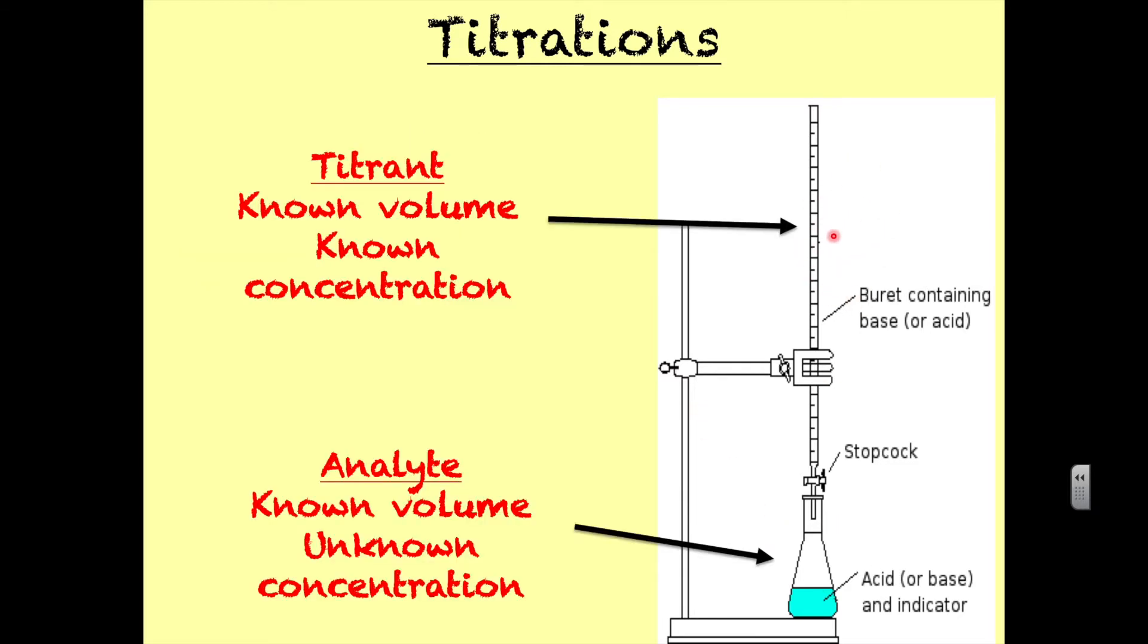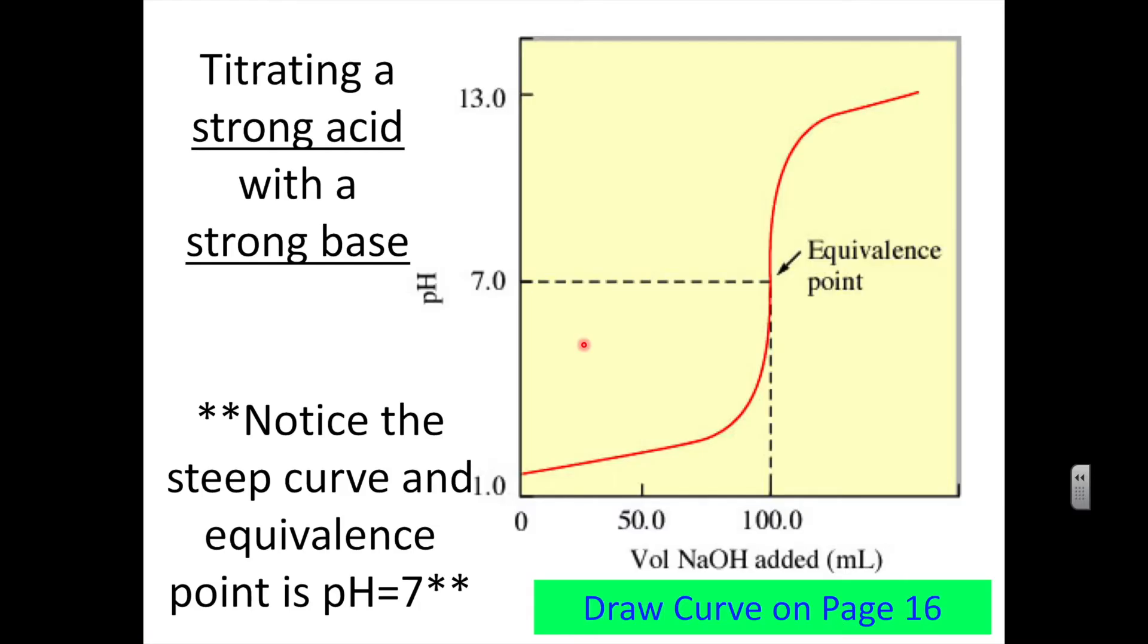This stuff is called the titrant right here, and this stuff is called the analyte. We put it in a burette held on a ring stand that usually has a burette clamp. This is called a stopcock - you turn it and it will let out maybe a drop at a time or a stream. Normally we will stir these automatically because stirring is very important, or you can just manually swirl it.